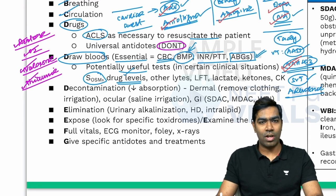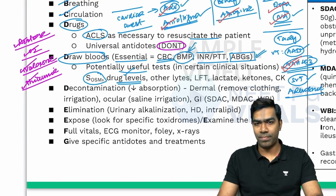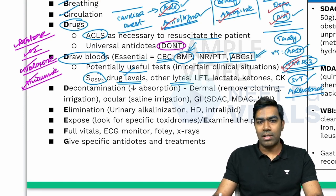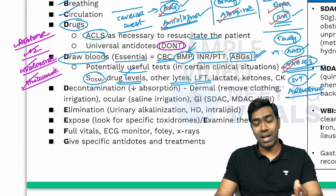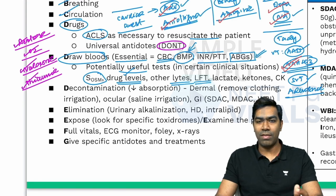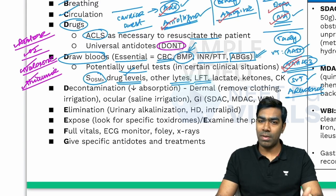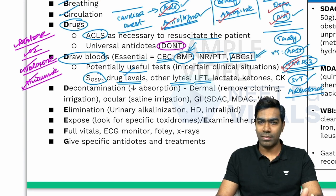Depending on the situation you can order specific drug levels. You can consider other electrolytes like calcium, magnesium, or phosphorus. LFT is very important in the setting of paracetamol poisoning or acute iron toxicity, where you can expect transaminitis — raised SGOT, SGPT — or raised bilirubin, and albumin as a prognostic marker.